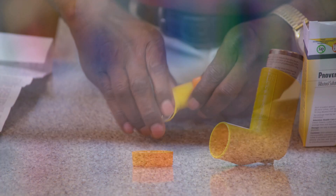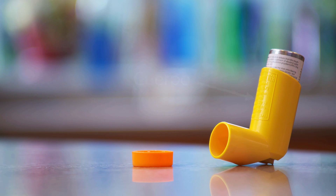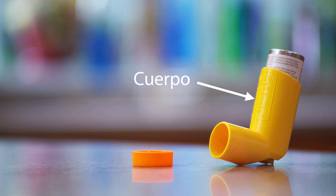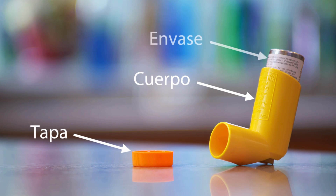El inhalador consta de tres partes: el cuerpo, la tapa de la boquilla y el envase de medicamento.